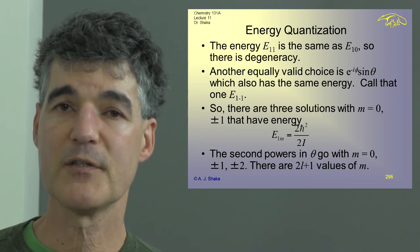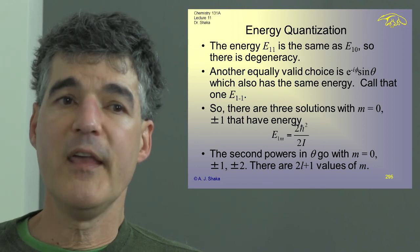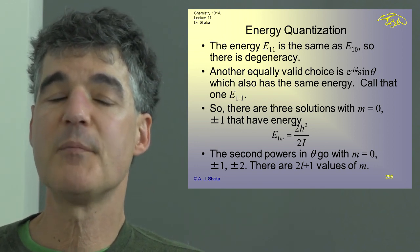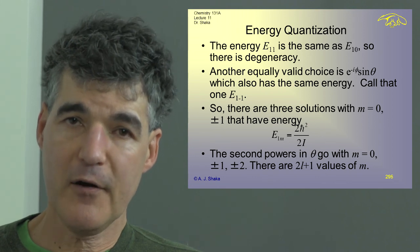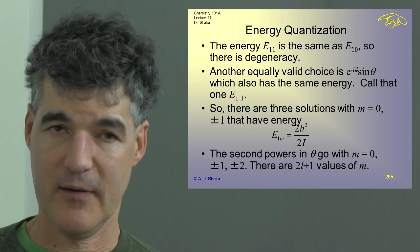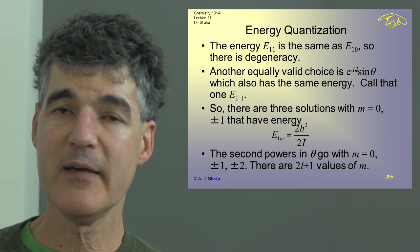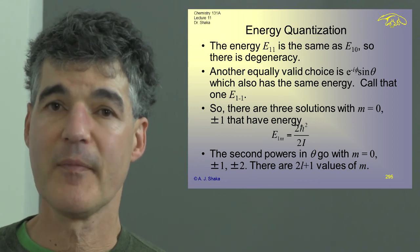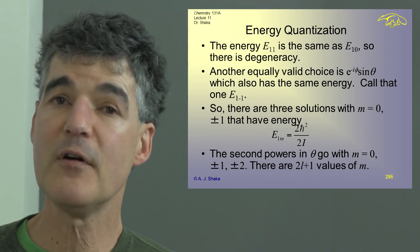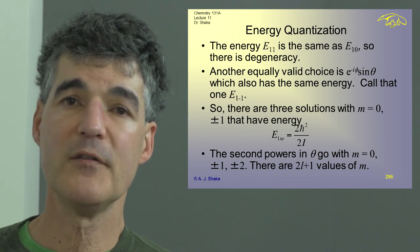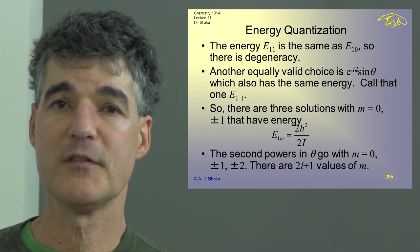That would make sense because l is going to turn out to be related to the square of the total angular momentum, and m has to do with just the z component. The z component of angular momentum can't exceed the total, so it must be bounded. They come in units of h-bar, so L squared comes in units of h-bar squared. For the second powers in theta — cosine squared, cosine, sine, and sine squared — there are 5 values of m: 2, 1, 0, minus 1, and minus 2. So we see a pattern: 1, 3, 5. In general, there are always 2L plus 1 values of m possible, where L is the highest power in the trig functions chosen for theta.